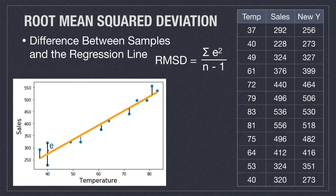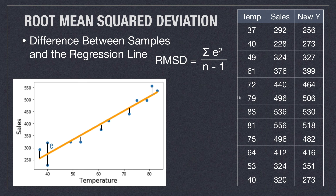The residual is the distance from your regression line to the sample point, represented by black lines on the chart. If each residual is E, we take the sum of all the residuals squared and then divide that value by the number of samples minus one. On the right side of the screen you can see a table with both the samples and the regression line values, which we'll use to calculate our root mean square deviation.